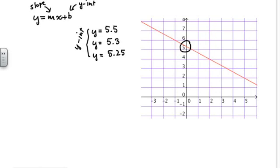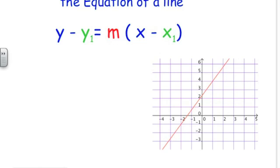So this equation y equals mx plus b, which requires us to know exactly what the y-intercept is, isn't going to do a very good job of writing the equation of that line. We have another form of the equation of the line — that's called the slope-point form of the equation of the line, and you see it here.